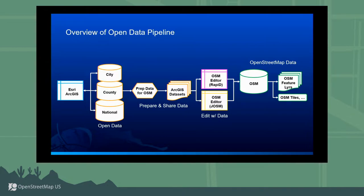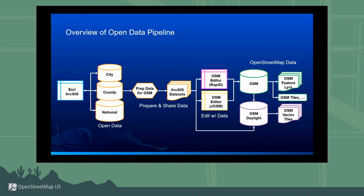A couple things happen after that. On the Esri side, we're publishing those edits as ArcGIS feature layers in ArcGIS Online, so you can consume OSM as hosted feature layers or feature services. They're also being added to the OSM tiles hosted by OpenStreetMap.org. And then the partners at Meta, Microsoft, and Esri are creating this OSM Daylight distribution — an alternate distribution of OSM where periodically we take OSM, run it through some quality checks, and output the OSM Daylight distribution. That's also being fed by some of these ArcGIS datasets to enrich it with additional features.